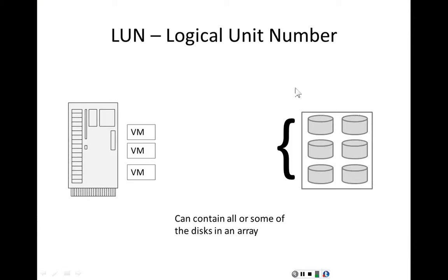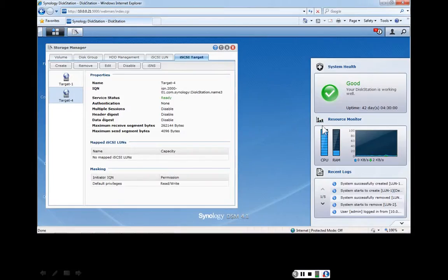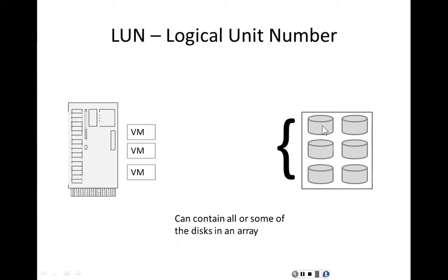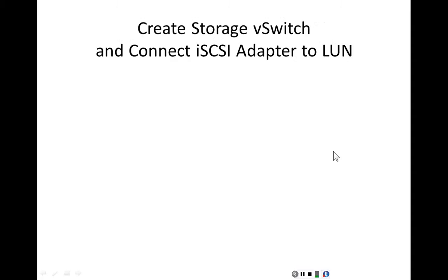The logical unit number has been created on the disk array. This whole procedure is not VMware-specific — it works the same way on most disk arrays. The logical unit number can contain some or all of the disks; it is a container that aggregates all the disks together. Next, we create a storage virtual switch and connect the iSCSI adapter to the logical unit number.